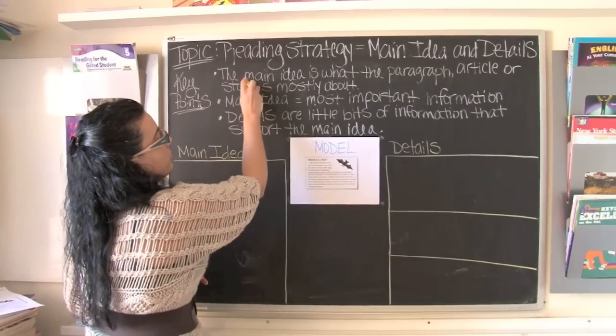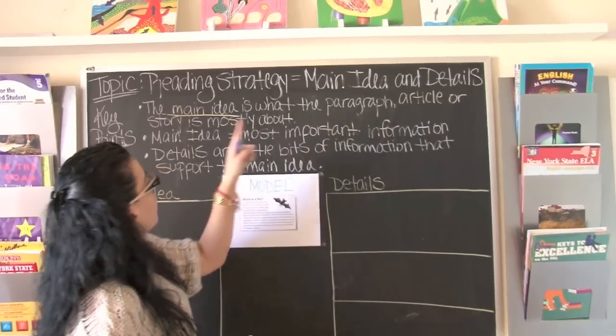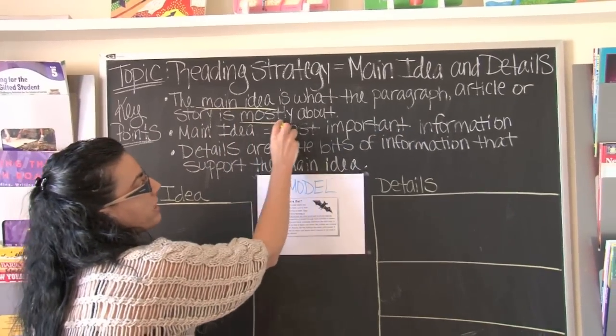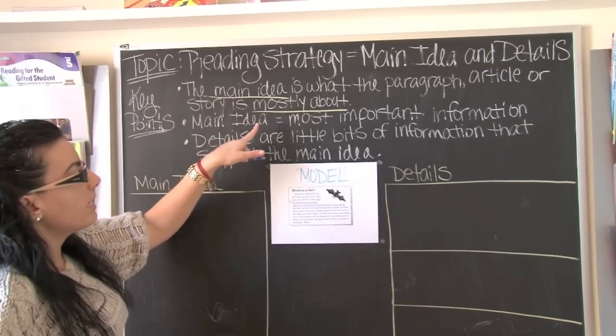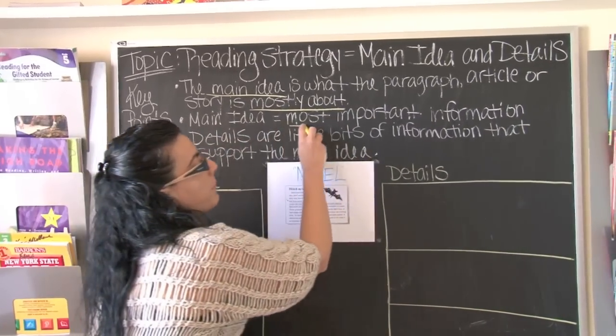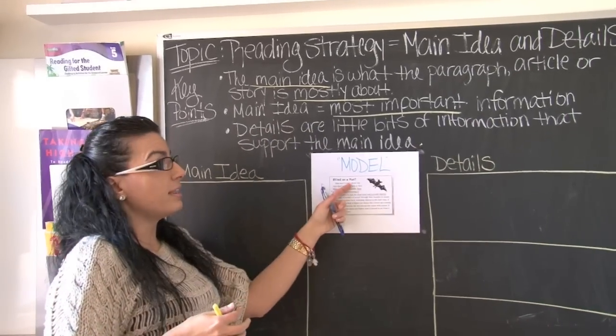The main idea is what the paragraph, article, or story is mostly about. Key point number two: the main idea equals the most important part, or the most important information in the text.